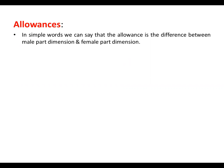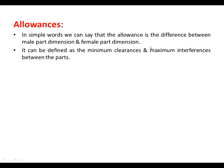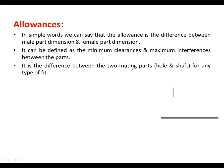So what is meant by allowances in drawing? In simple words, we can say that the allowance is the difference between male part dimension and female part dimension. It can be defined as the minimum clearance and maximum interference between the parts. It is the difference between two mating parts, hole and shaft, for any type of fit.